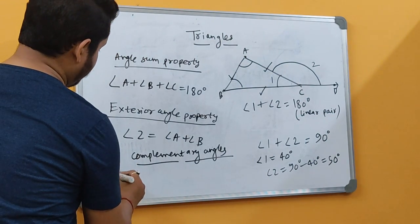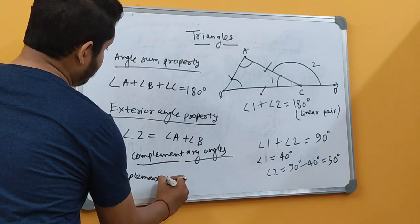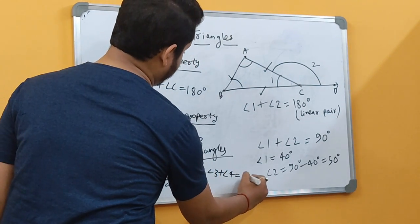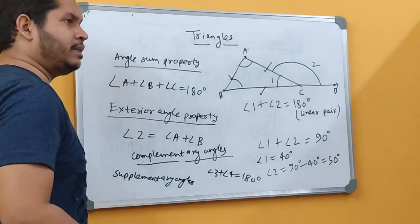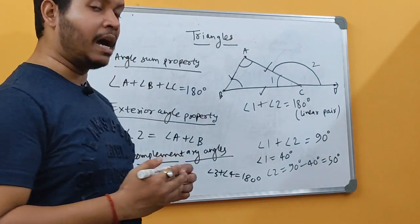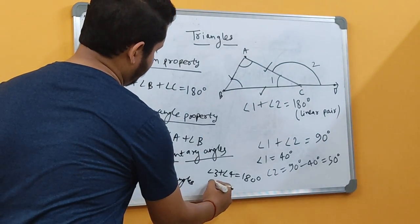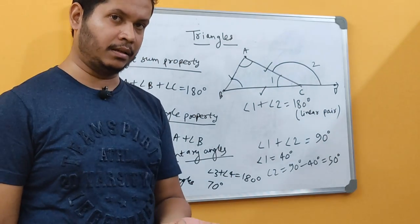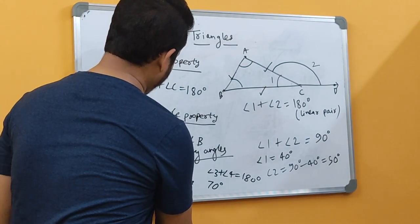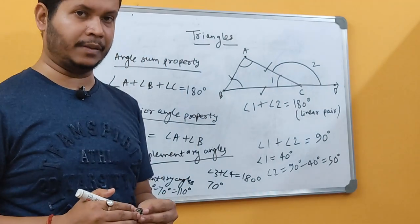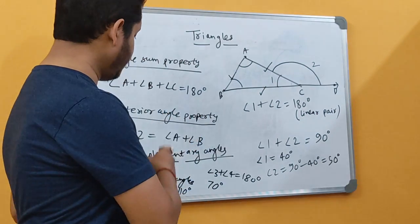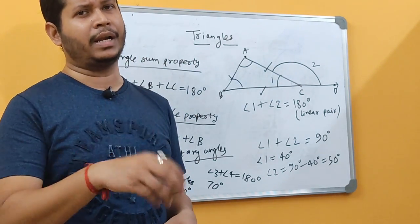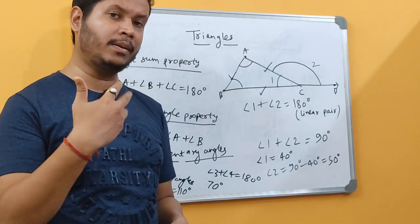The next concept is called supplementary angles — a similar concept, but the sum is different. In supplementary angles, the sum of any two angles is 180 degrees. If they ask you what is the supplement of an angle, say 70 degrees, you simply subtract 70 from 180 degrees. So 180 minus 70 equals 110, meaning 110 is the supplement of 70. The difference to remember: complementary angles sum to 90, supplementary angles sum to 180. If asked for a complement, subtract from 90; if asked for a supplement, subtract from 180.